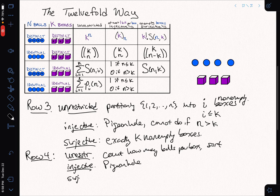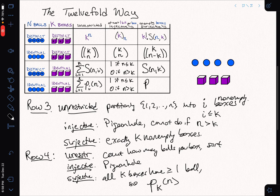And in the surjective case, the last one to do, again, we can say, well, this is the same as the unrestricted case, except that now I have to say all of the boxes get filled. So all k boxes have at least one ball. So we get a partition into exactly k parts.